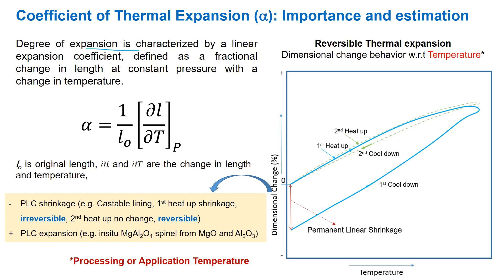The degree of expansion is characterized by a linear expansion coefficient, defined as a fractional change in length at constant pressure with a temperature change delta T. We can measure both dynamic — meaning continuous variation of expansion or shrinkage behavior with temperature — or static data at a particular temperature of interest, which may be the processing or application temperature.